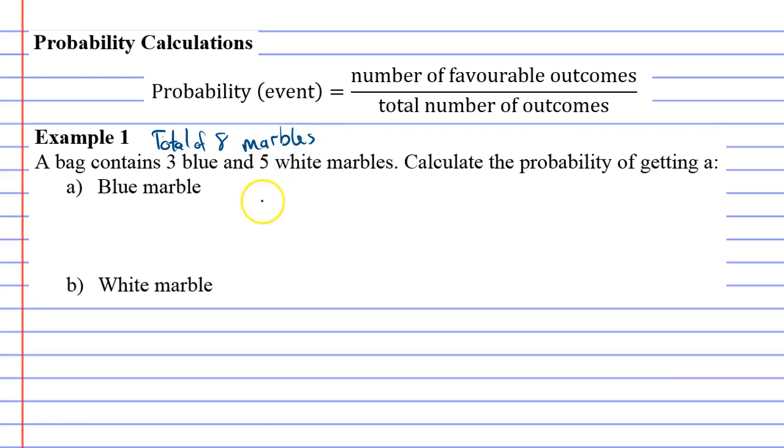So what we're going to say, what's the probability of getting a blue marble? Using correct terminology we're going to go P bracket blue, and that's basically saying the probability of getting a blue marble equals. When you look at the formula you can see that P stands for probability and the event is that we get a blue marble.